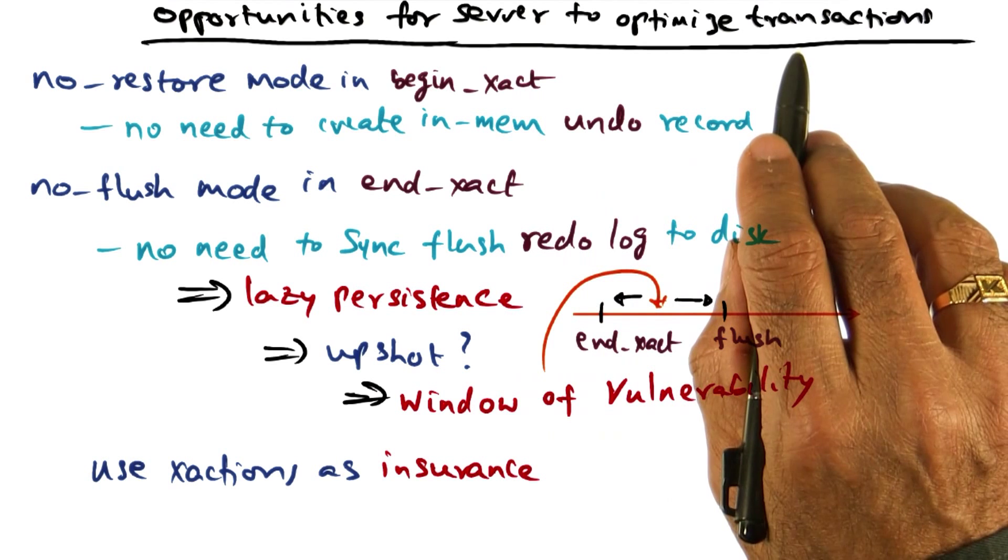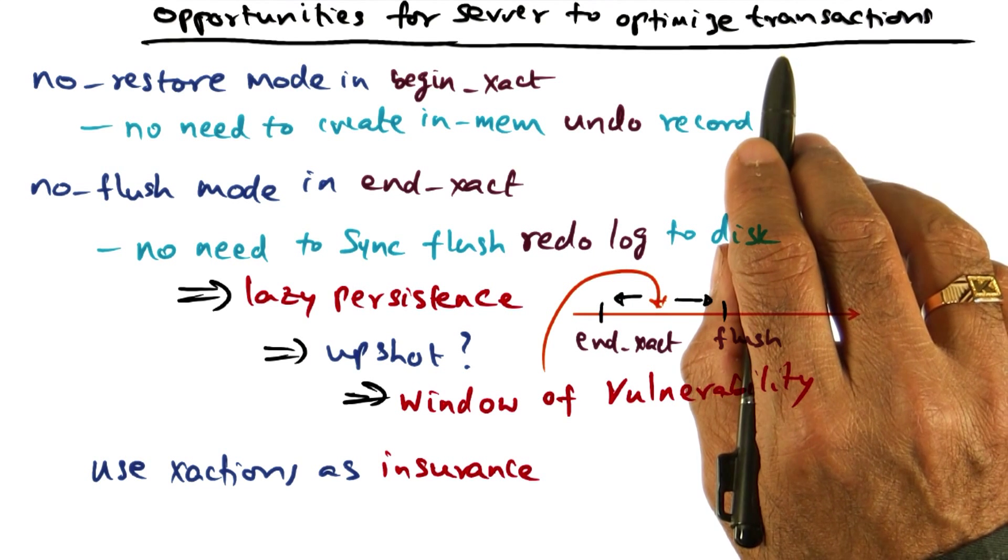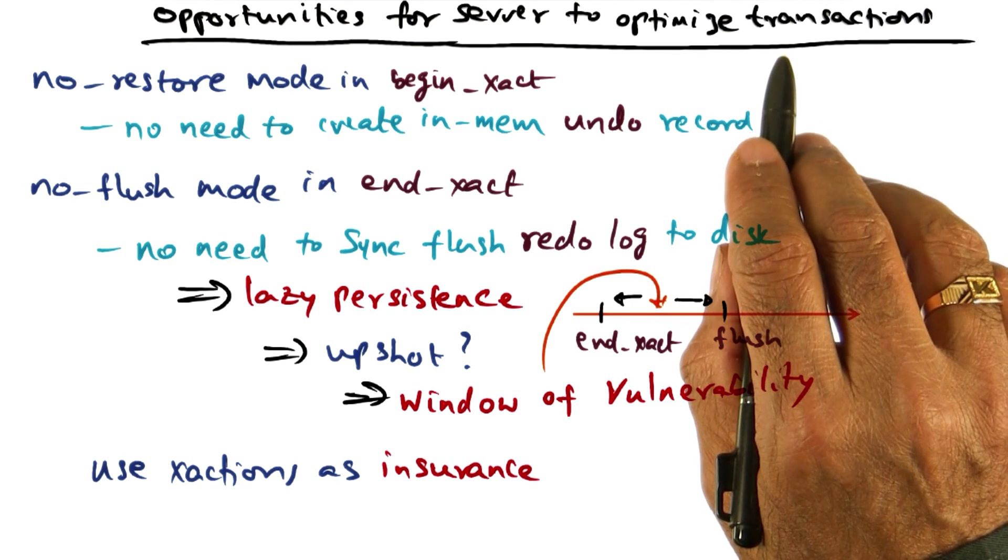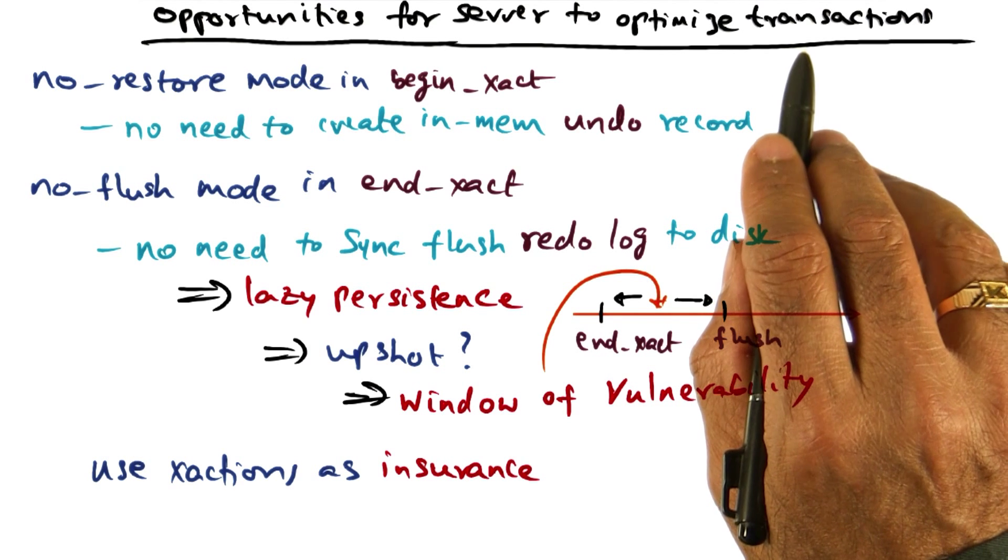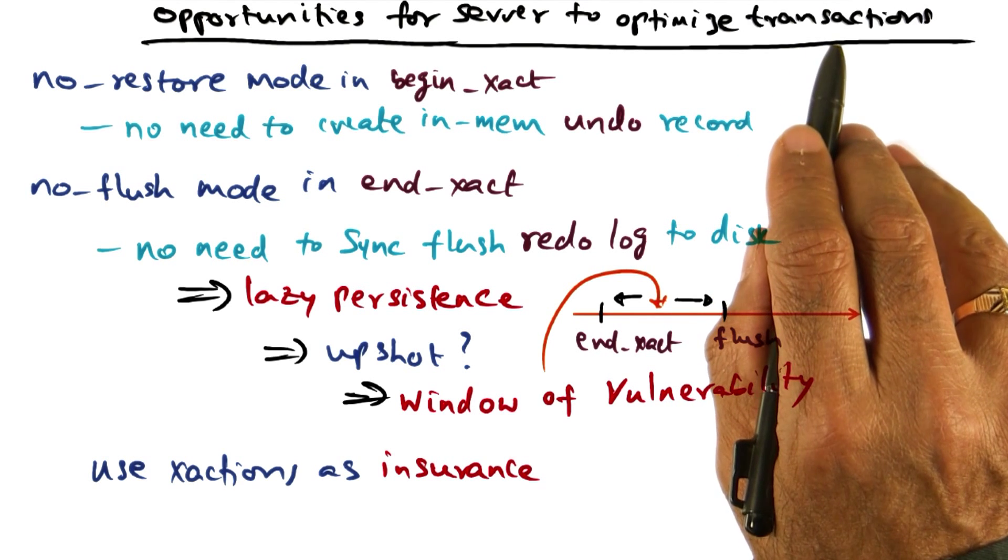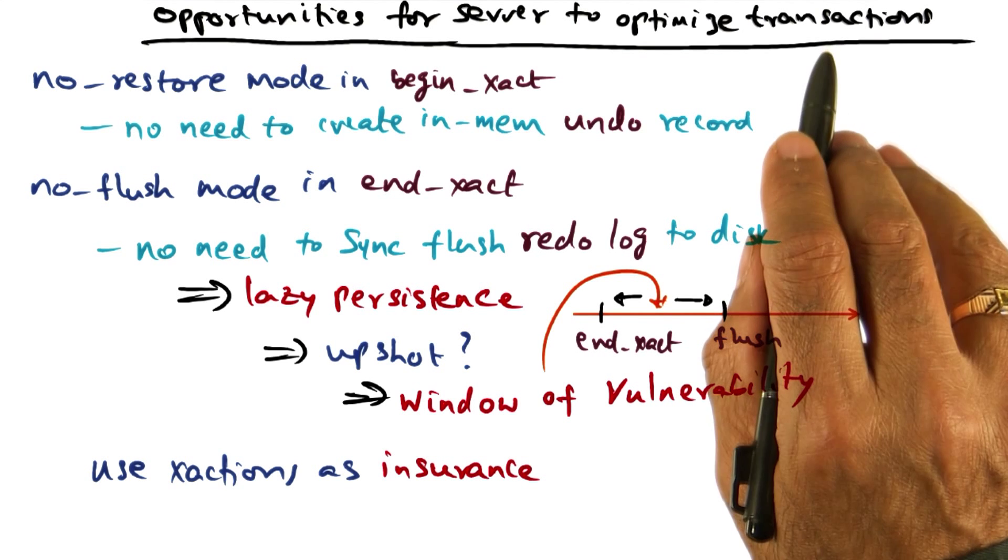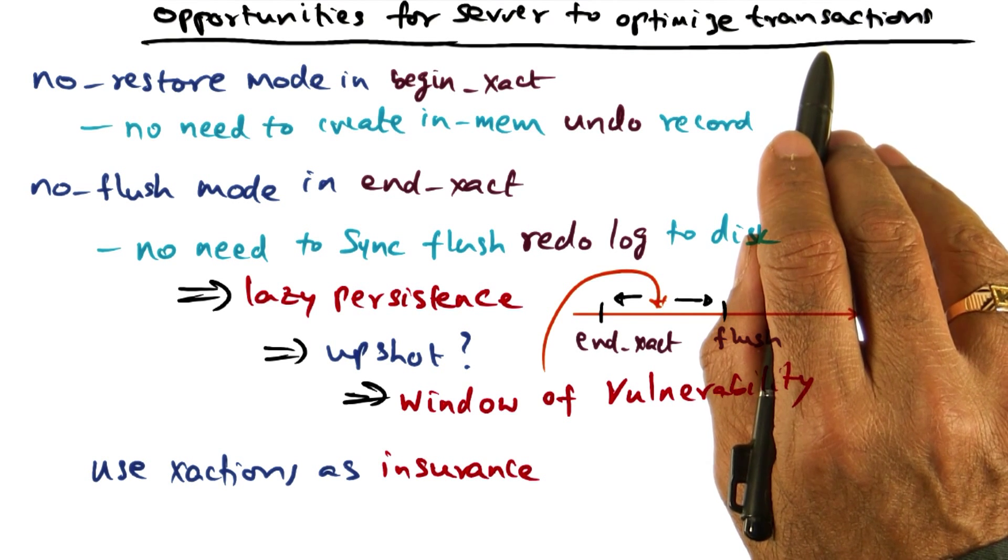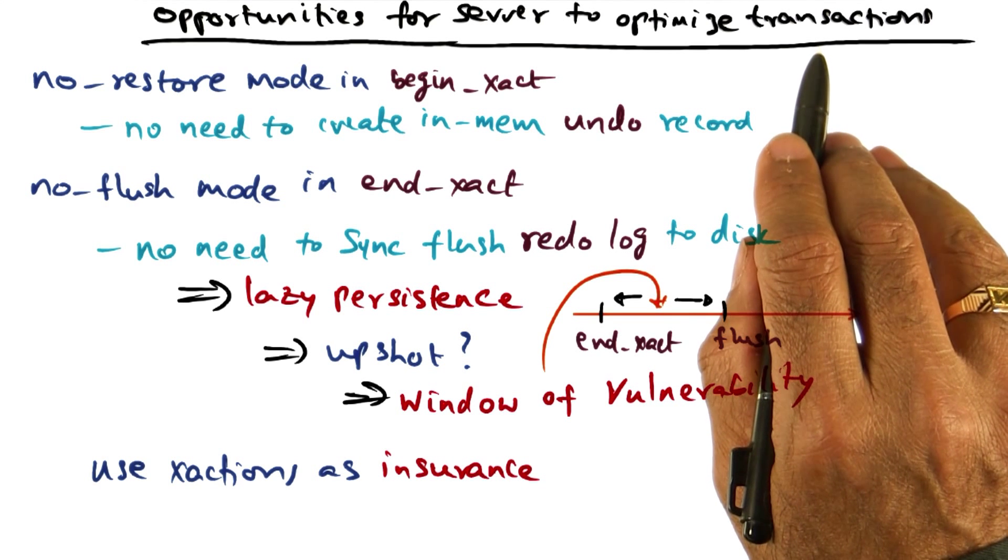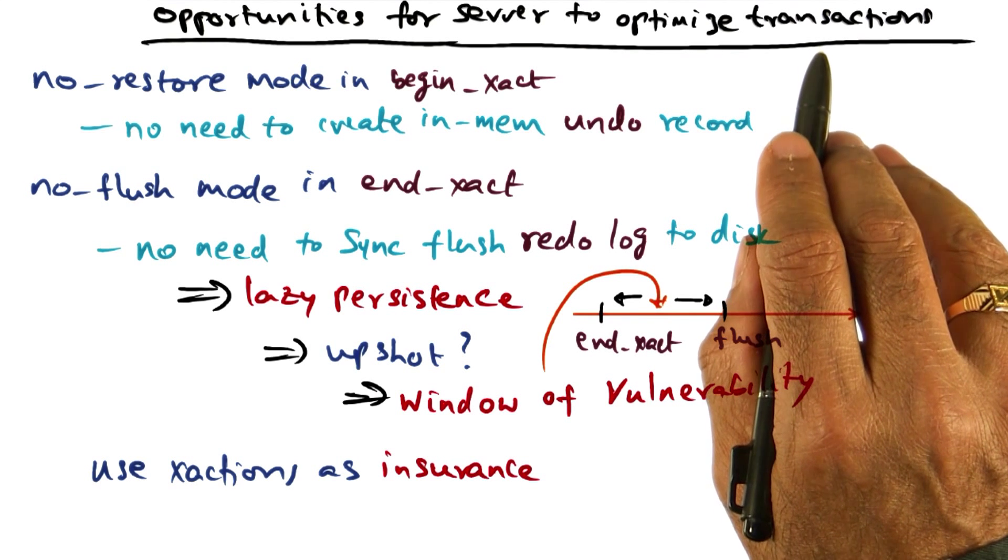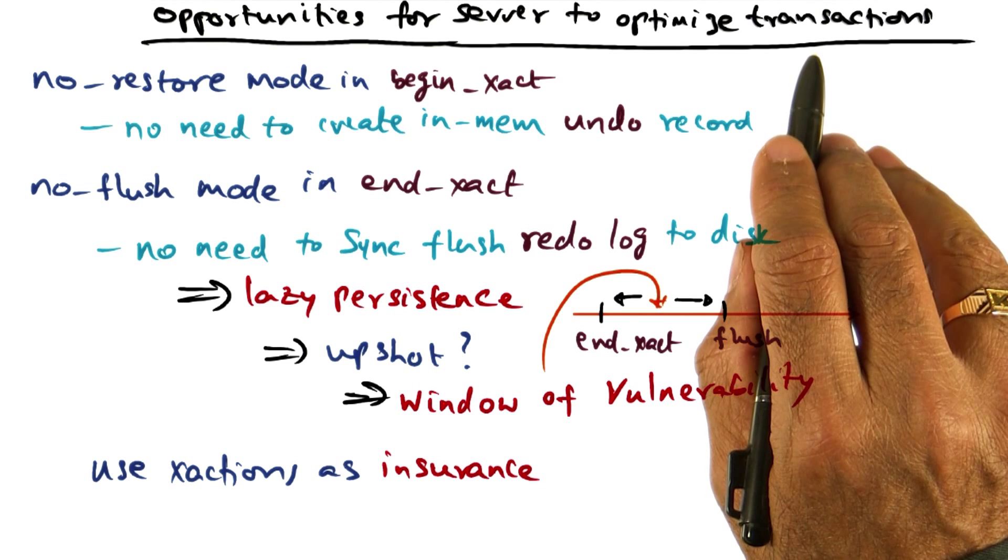In other words, the transaction semantics of RVM is already a stripped down version of the traditional transaction semantic. It doesn't worry about nested transactions and so on, but still transaction by its very nature requires that at commit point, you have to do a synchronous IO to the disk.